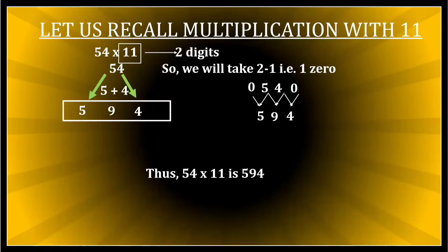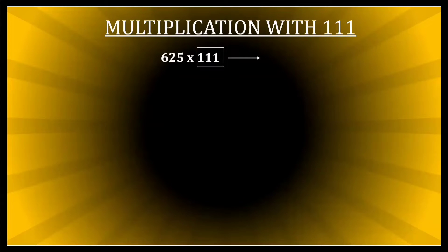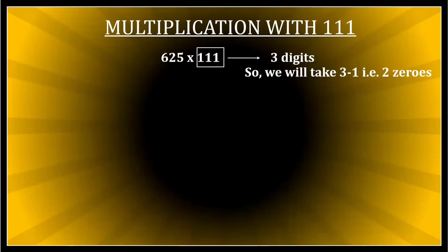Now, the same thing extended when we are multiplying with 111. Let's say 625 multiplied by 111. How many digits are there in 111? There are three ones — three digits. If there are three digits, how many zeros must I put? Three minus one equals two zeros. I will sandwich 625 with two zeros on the left and two zeros on the right.